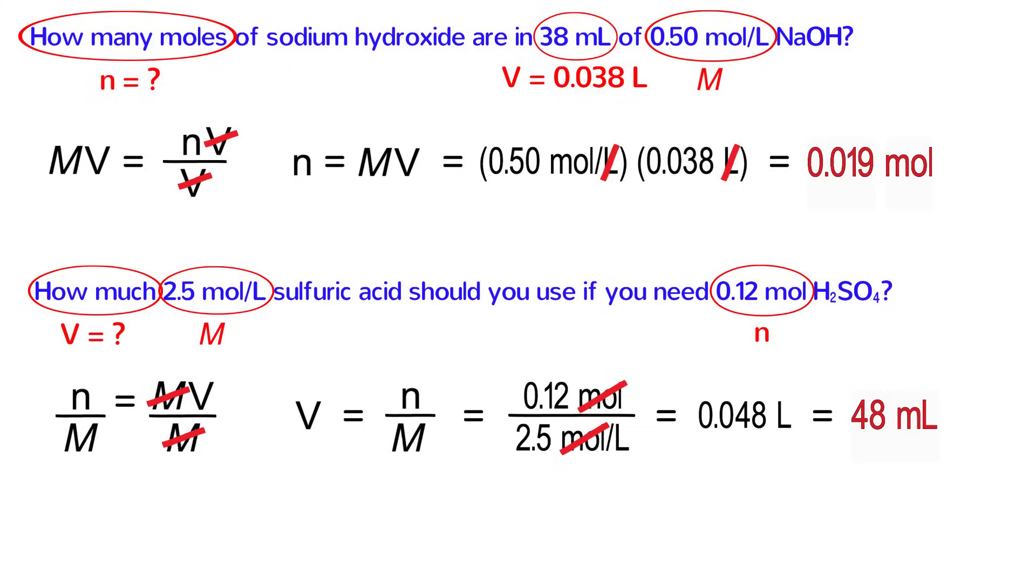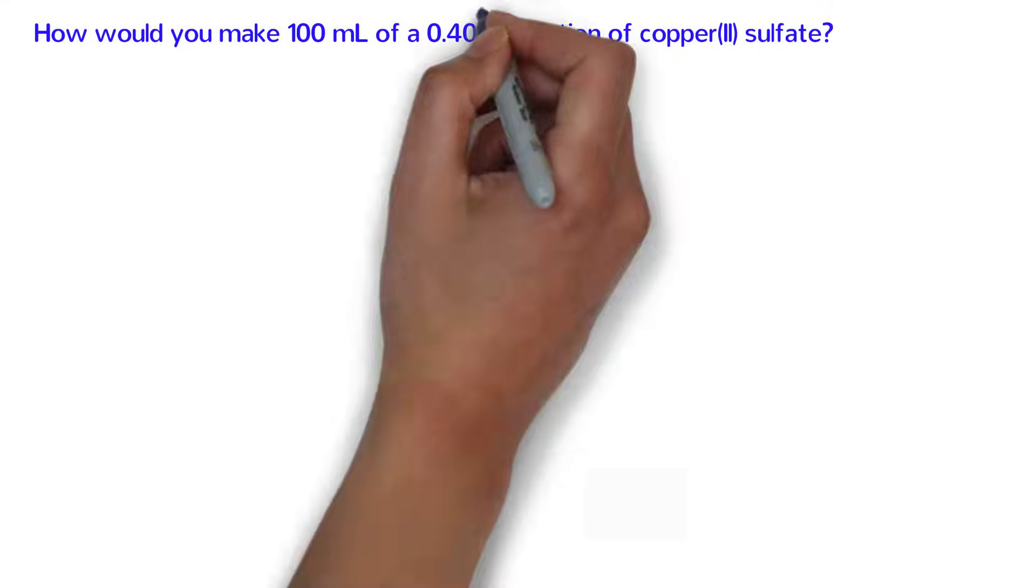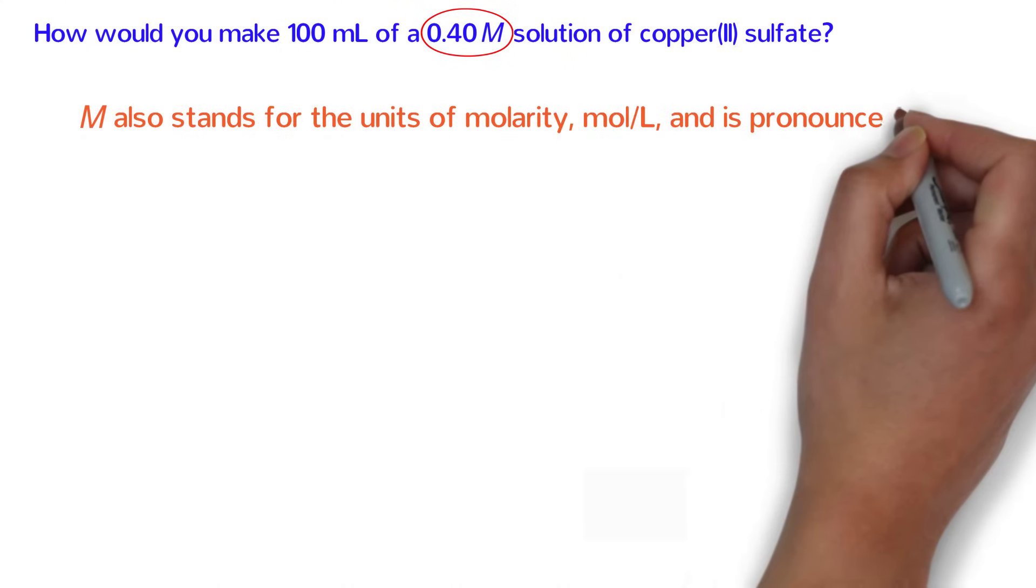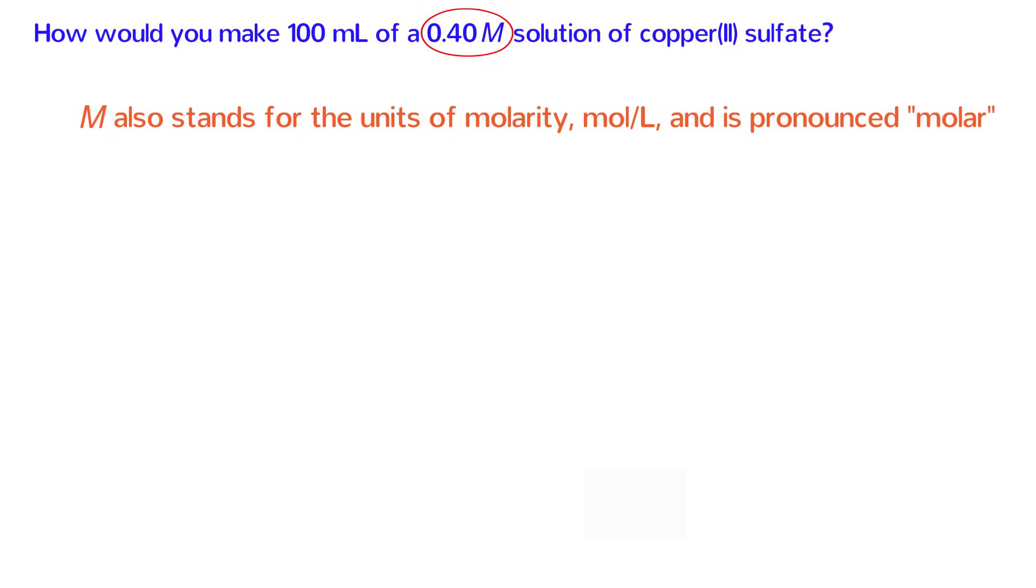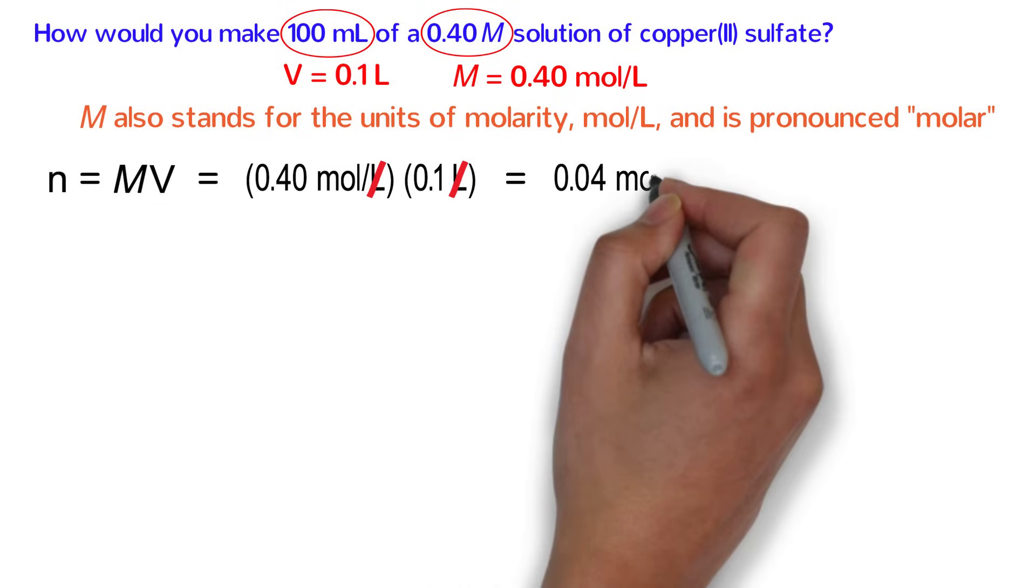Now for our final problem. Let's talk about how you would actually make a solution of a given molarity. How would you make 100 milliliters of a 0.4 molar solution of copper 2 sulfate? In this question, we notice something different, 0.40M. That italicized M not only stands for molarity, but it also stands for the units of molarity, moles per liter, and is pronounced molar. So a 0.4 molar solution is the same as 0.4 moles per liter. The volume of the solution that we need to make is 100 milliliters, which is the same as 0.1 liters. This problem is more complex than the previous ones, but let's go ahead and solve it like the previous problems first. If we know V and M, then we can calculate N. M equals N over V rearranges to N equals MV. Substituting in for M and V gives us 0.4 moles per liter times 0.1 liters. Liters on the top and bottom cancel, and the answer is 0.04 moles.